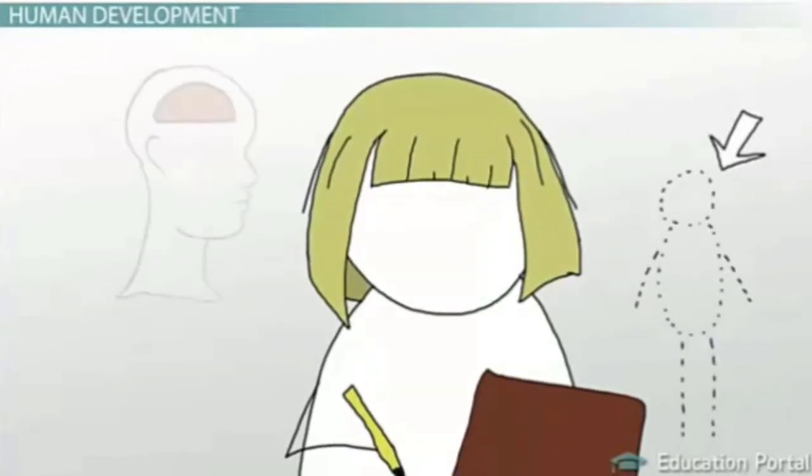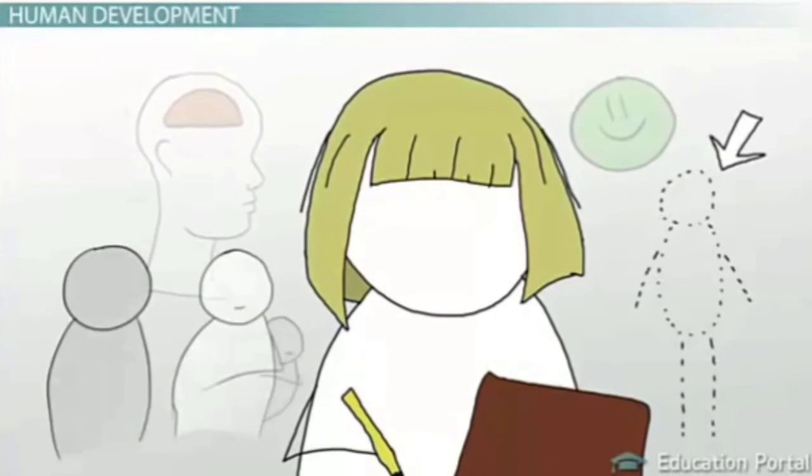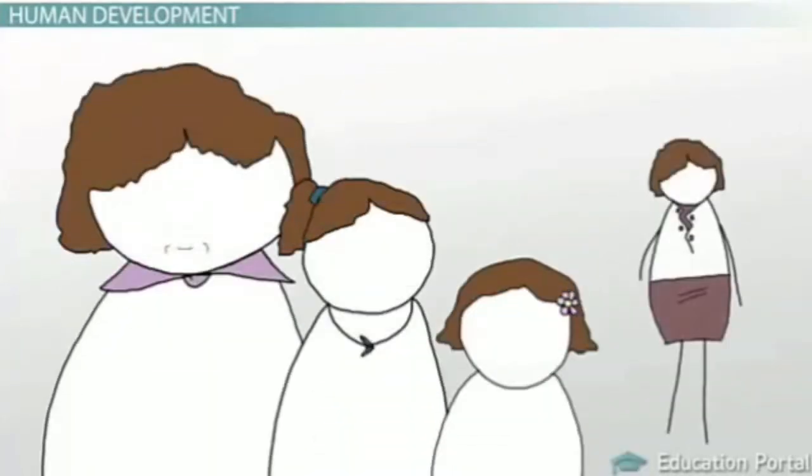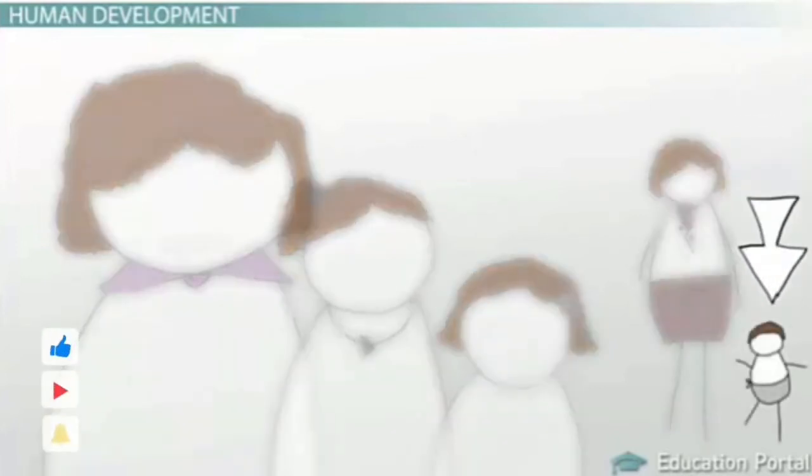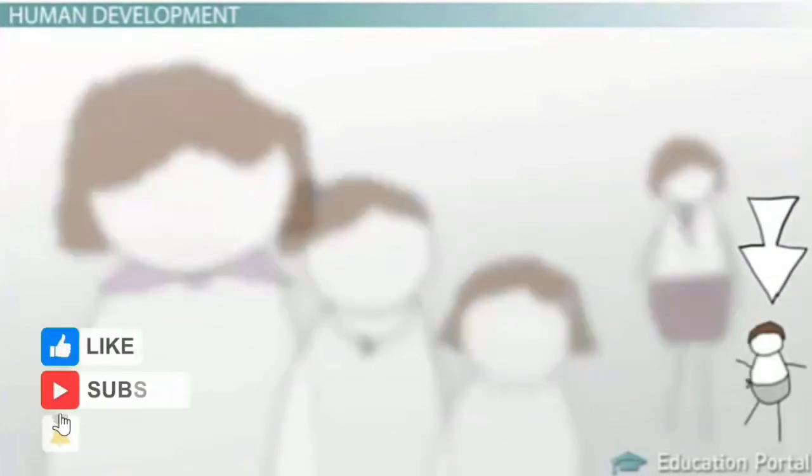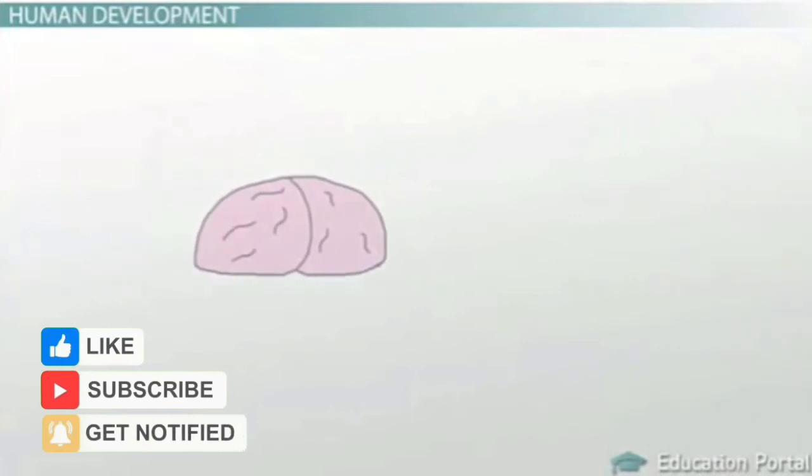Human development is the way that people grow and change over time. There are many types of development: physical, cognitive, emotional, and social, just to name a few. And while humans develop throughout their entire lives, a lot of momentous changes happen in the first two years of life.